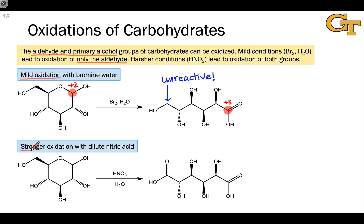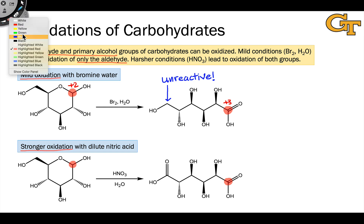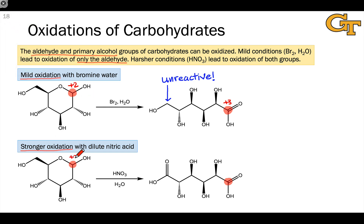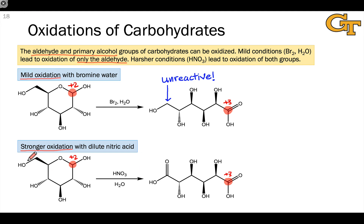Dilute nitric acid represents a stronger oxidizing agent than bromine water, and treatment of glucose with dilute nitric acid results in oxidation of both the primary alcohol and aldehyde groups. At the aldehyde or anomeric position, an oxidation has occurred from an aldehyde or hemiacetal to a carboxylic acid — once again going from oxidation number +2 to +3. Oxidation has also occurred at the primary alcohol: carbon-6 in the cyclic form undergoes oxidation from +1 in the starting material to +3 in the product.